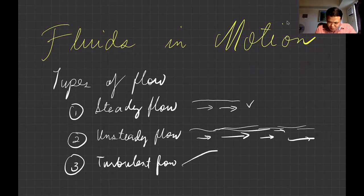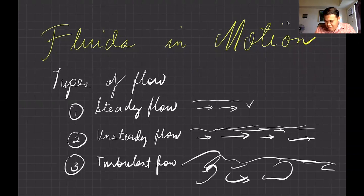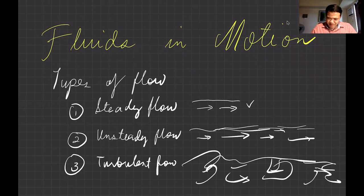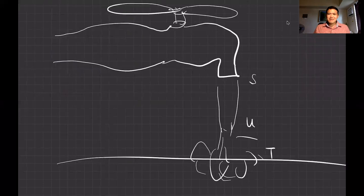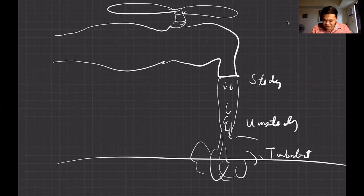In turbulent flow, the velocity is changing in direction and the fluid is moving randomly in different directions. You can actually see these types of flow in a faucet — near the top it's steady flow, further down it becomes unsteady, and when it hits the bottom it's already turbulent.